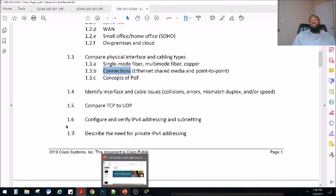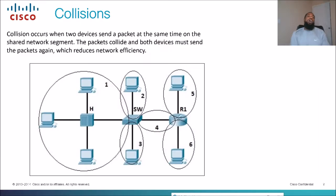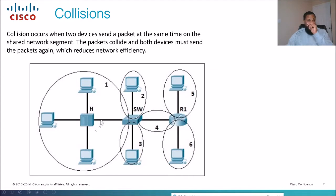A collision occurs when two devices send a packet at the same time on a shared network segment. These cables right here we consider media — since we're all sharing that media we call it shared media, which is what they mean by shared network segment. The packets collide and both devices must send the packets again, which reduces network efficiency.